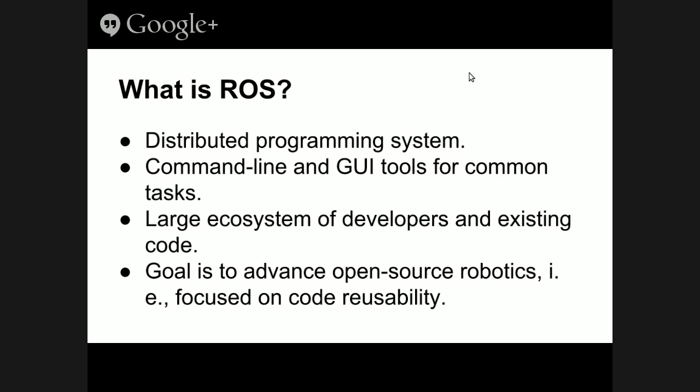If you look on the ROS website, they often describe themselves as a combination of a few things. First is what they call plumbing — they offer an architecture for how to structure your programs and how these things can communicate with each other over networks. They also offer a bunch of tools: visualization tools, tools for inspecting the state of the system, and so on. And then probably one of the more important things is that they're all about promoting open source code and code reuse.